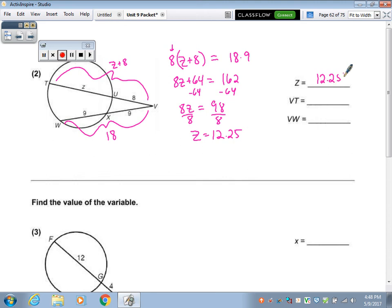So the Z is 12.25, VT, the whole thing, is 12.25 plus 8, which is 20.25. And VW is that whole one, which is 18.